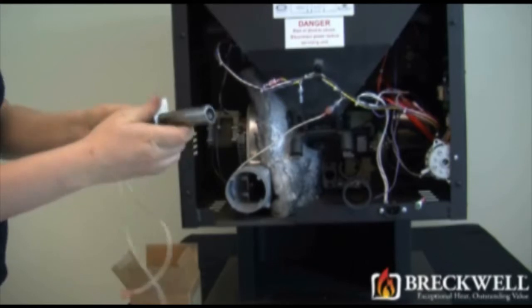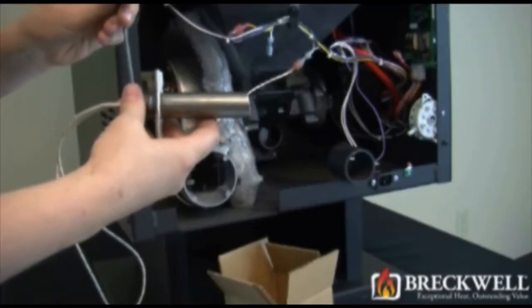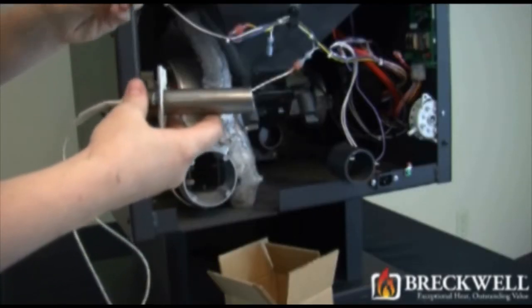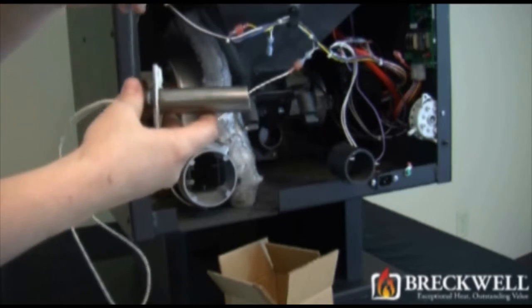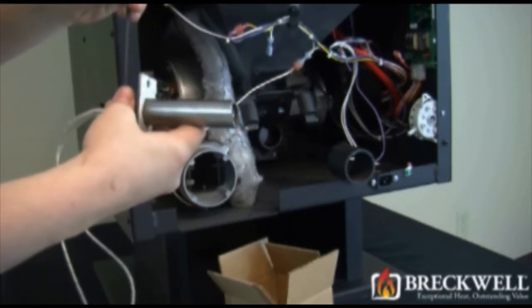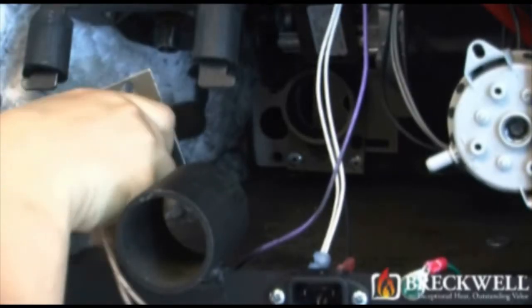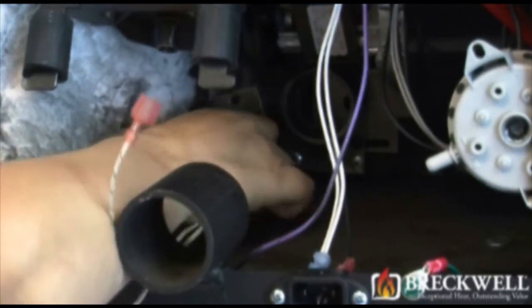Now, take your new igniter module and insert it into the igniter housing. Leave approximately one quarter inch from the end of the housing to the tip of the igniter module. Then tighten your set screw back up to hold the igniter in place.